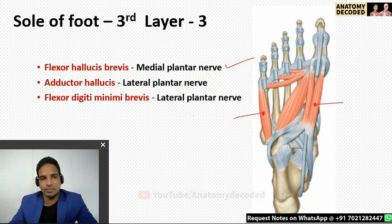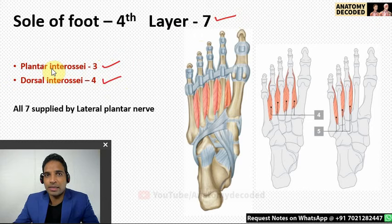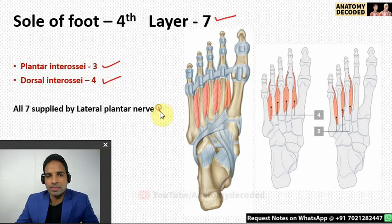In the fourth layer of the sole there are seven muscles: three plantar interossei and four dorsal interossei. These correspond to the palmar interossei of the upper limb. The plantar interossei attach along the lateral three metatarsals. The dorsal interossei attach along the adjacent surfaces of all metatarsals and are bipennate muscles. All seven muscles of the fourth layer are supplied by the lateral plantar nerve. Overall, most muscles of the sole are supplied by the lateral plantar nerve, except those along the medial aspect, which are supplied by the medial plantar nerve.